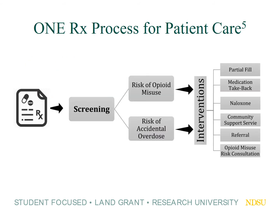So first, I'd like to talk about the 1Rx process for patient care. Every patient coming into 1Rx pharmacies will bring their prescription to the pharmacist, at which point the pharmacist will have them undergo two different screenings. The first is the use of the ORT, or the opioid risk tool, to evaluate the risk of them perhaps being at higher risk to experience opioid misuse. The second is to screen them for the risk of accidental overdose. These two screening tools have been described in other 1Rx publications and presentations on our webpage. The result of those screenings leads to the decision about which interventions to provide those patients in the community pharmacy, including the six shown on the right.